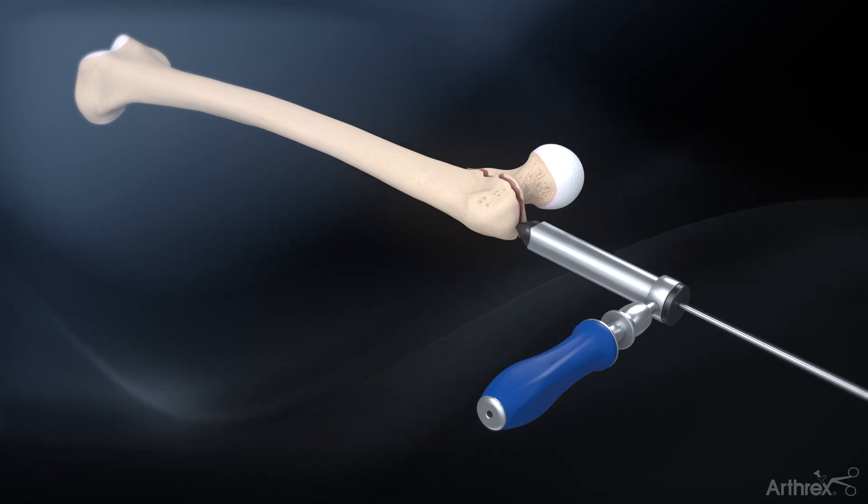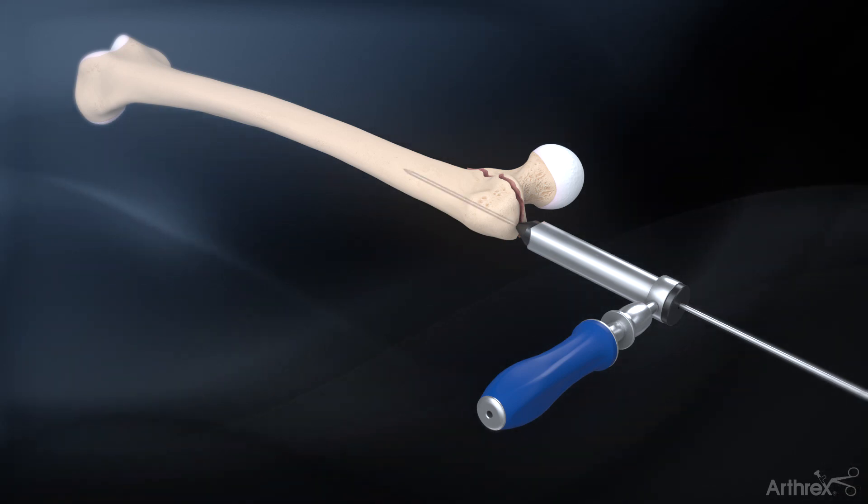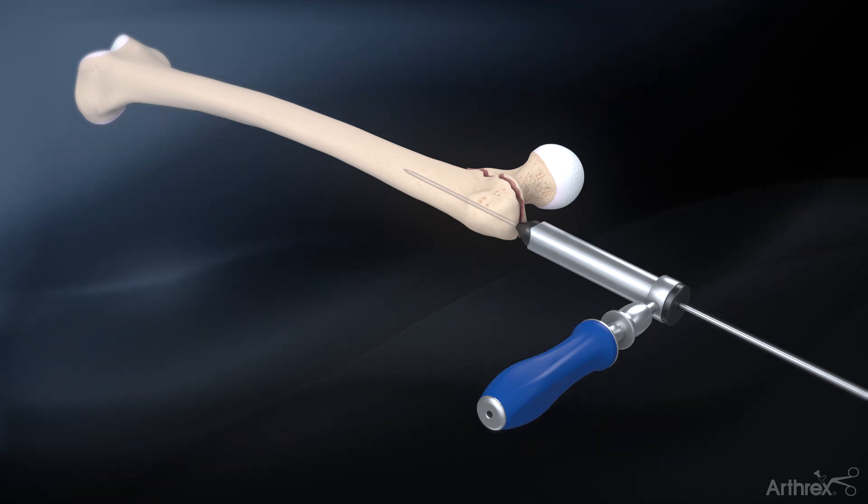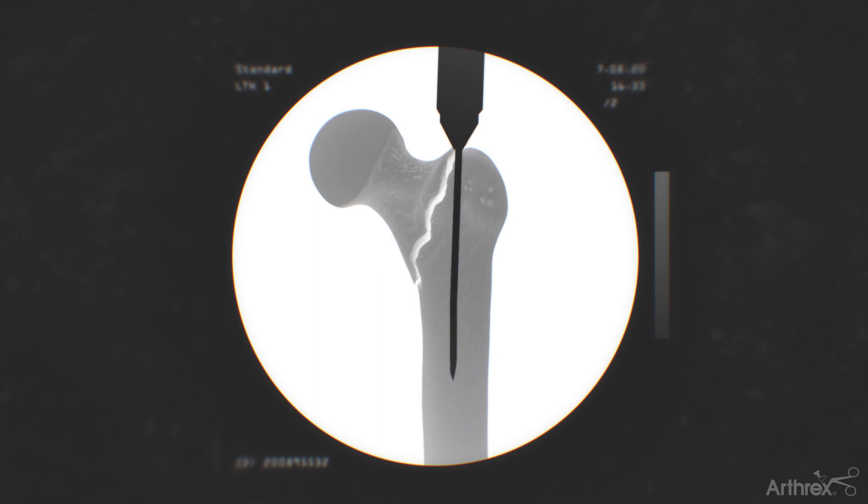Insert the 3.2 mm guide pin through the soft tissue protector and aim towards the central axis of the femoral shaft. Advance at least to the level of the lesser trochanter. The pin trajectory is verified through fluoroscopy.